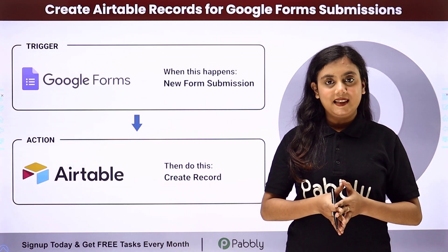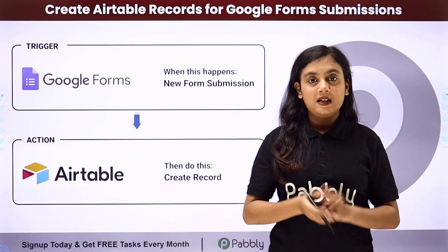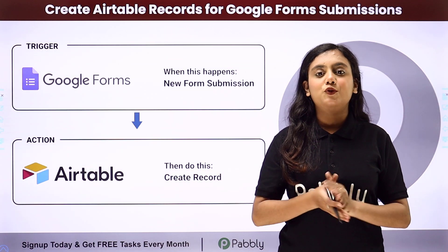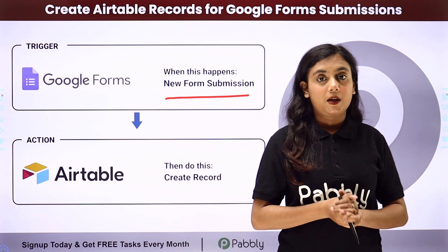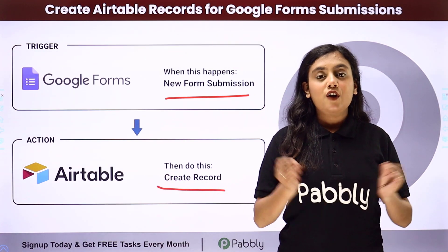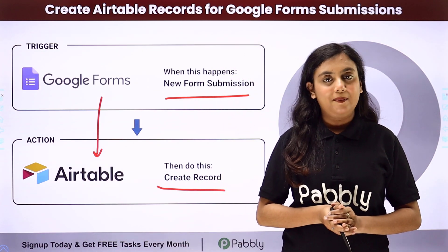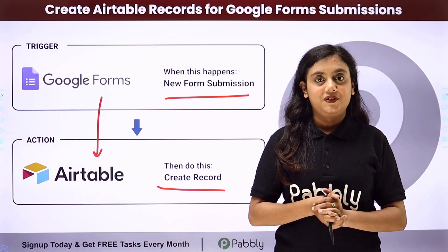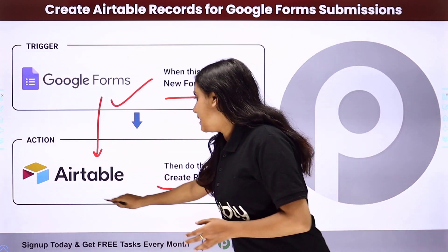Hello everyone, welcome back to Pabbly. In this video we're going to learn how to create Airtable records for Google Forms submission. I am an owner of a business and I am collecting my customers' feedbacks with the help of Google Forms. Every time a new form submission is done, automatically all the data of that form should be added into my Airtable. For that we need to create an automation between Google Forms and Airtable with the help of Pabbly Connect. Our Trigger application is Google Forms and our Action application is Airtable.